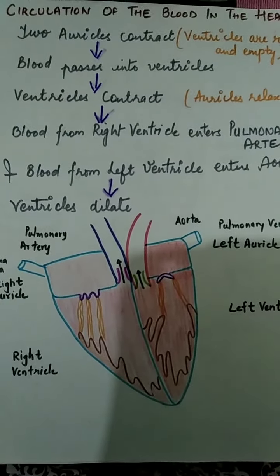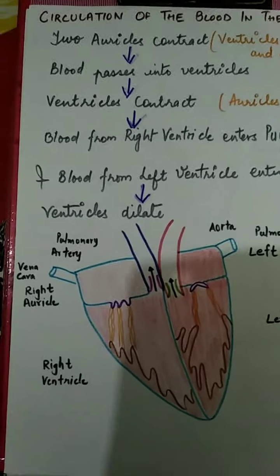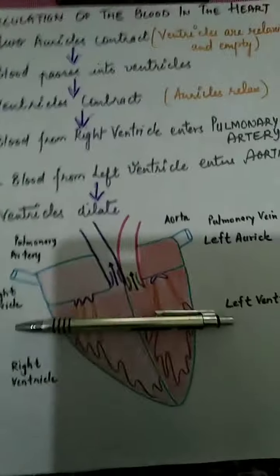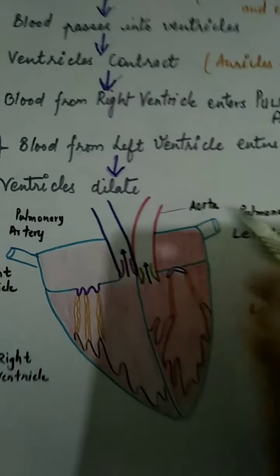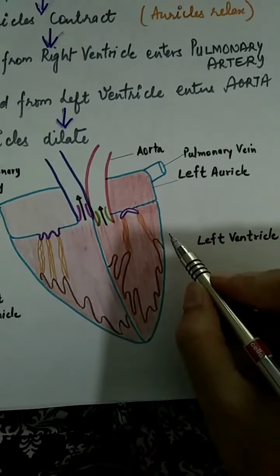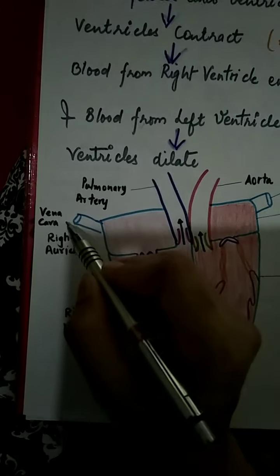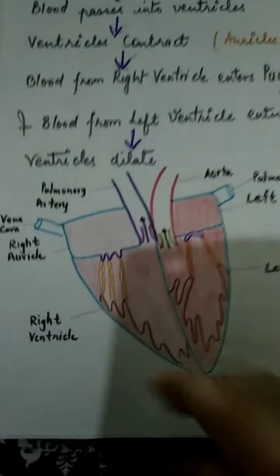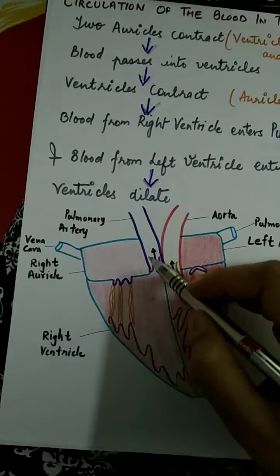Till now we were going through a simplified diagram of the heart, but now you might have understood the diagram and the places where the different parts are placed inside the heart. Here, this is the aorta, these are the pulmonary veins, this is the left auricle, and this is the left ventricle. This is the pulmonary artery, these are the vena cavas, this is the right auricle, and this is the right ventricle.